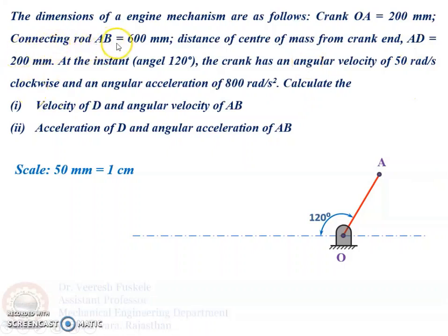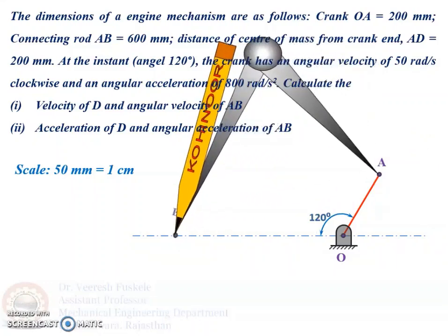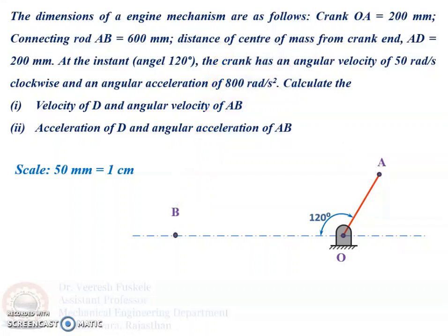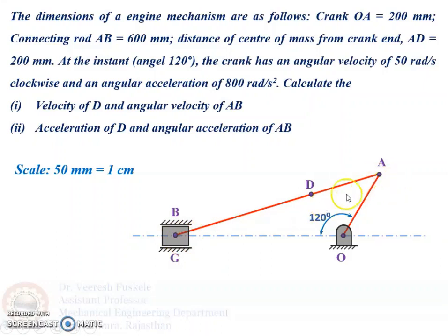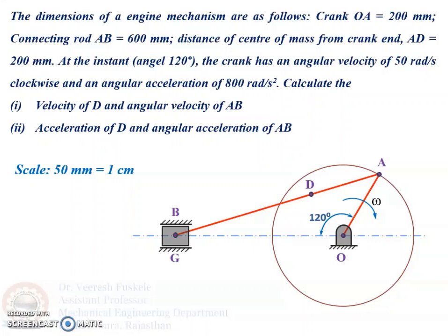Next, we draw the connecting rod AB. Point B will lie on the center line. We take a distance of 600 mm on the compass according to the scale and cut it on the center line to get point B. The slider is placed at point B and will move between the guides. We then join B to A — this is the connecting rod AB. Point D lies on AB such that AD = 200 mm. The crank rotates at an angular velocity of 50 radians per second clockwise. This completes the configuration diagram.